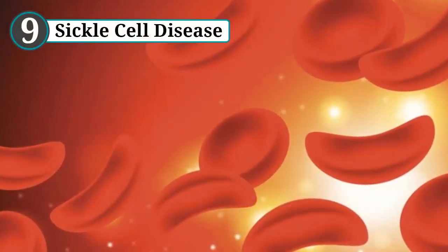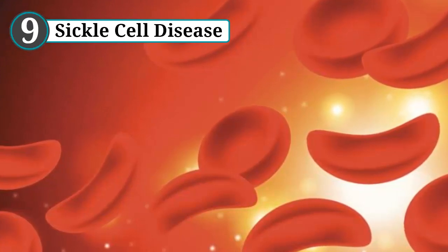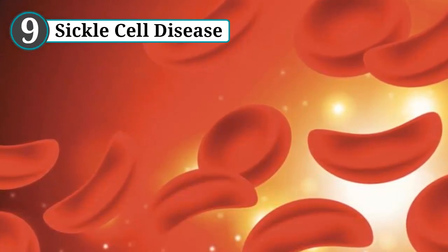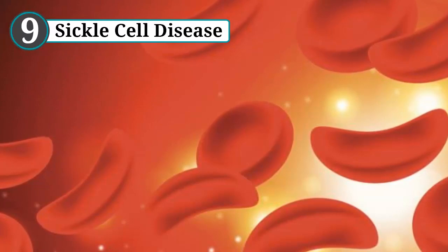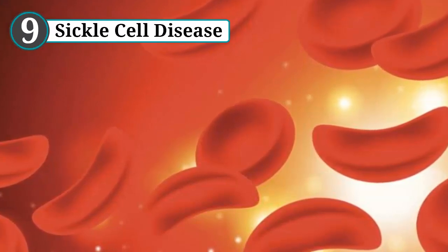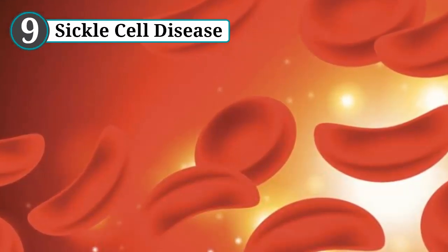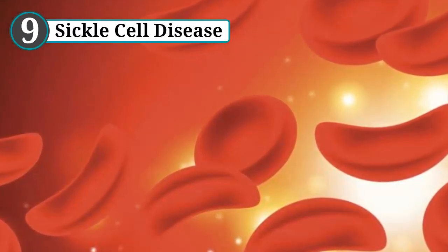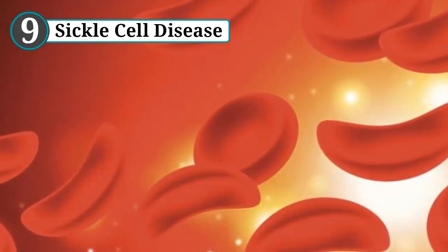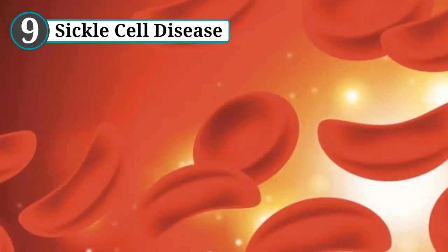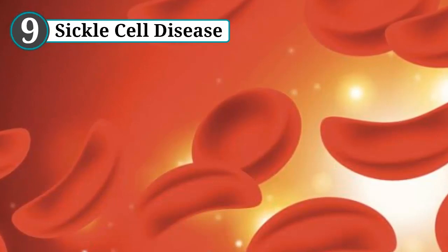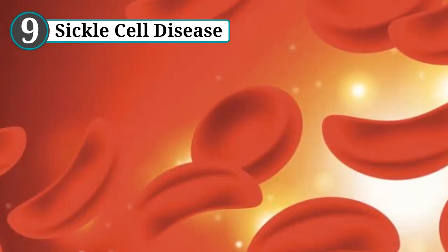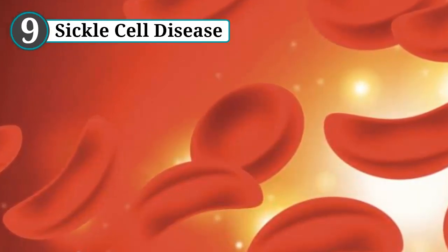Number 9: Sickle Cell Disease. For most of humanity's existence, sickle cell disease usually meant an early death, most likely as a young child. It still does in underdeveloped nations. In fact, the average life span for a sufferer in the U.S. in 1973 was only 14 years. Now it's 40 to 60 years in the U.S.